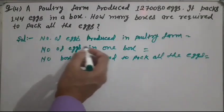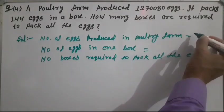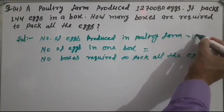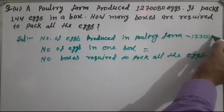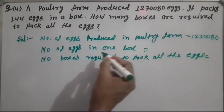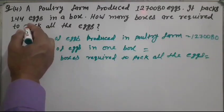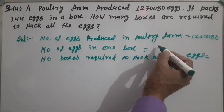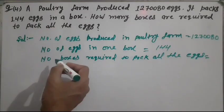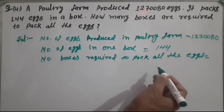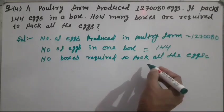What are the values? Number of eggs produced in poultry firm is 1,270,080. Number of eggs in one box is 144. How many boxes are required to pack all the eggs?